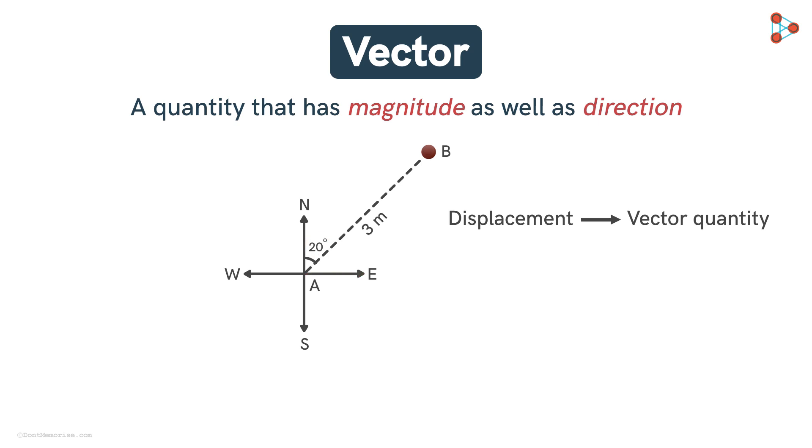As we saw earlier, we can represent a vector by an arrow. So the displacement vector is represented by an arrow with its initial point as A and its terminal point as B.